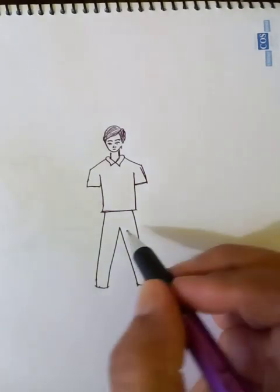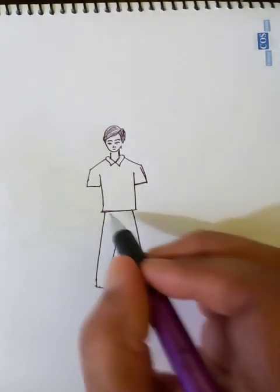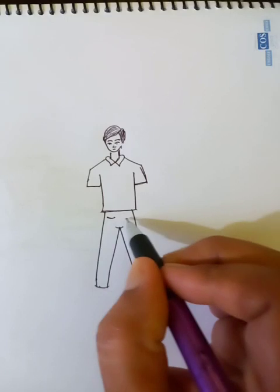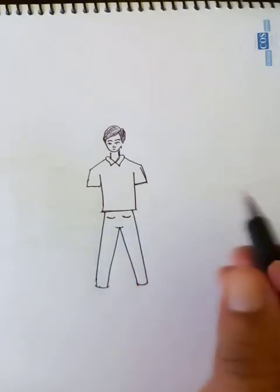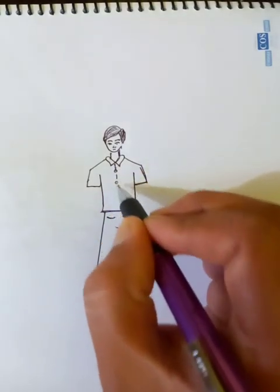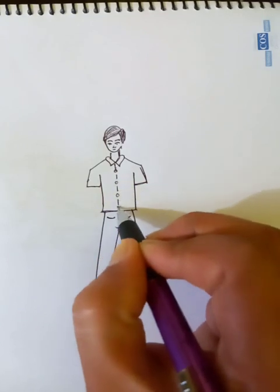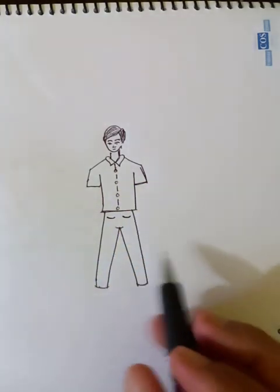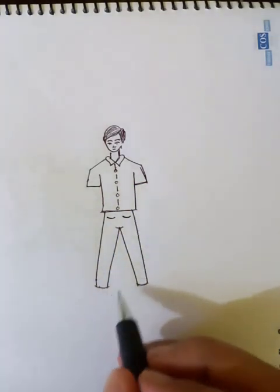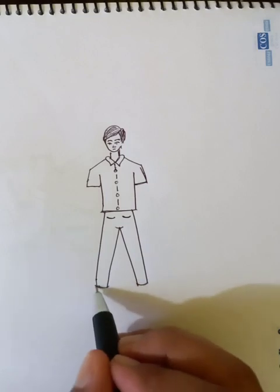This is a very simple drawing for the beginner. All right, you can add some buttons to the dress. Then I can put a shoe here.